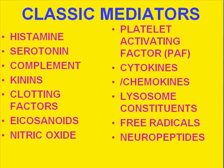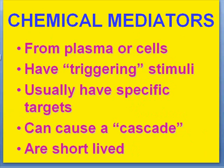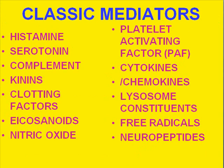In this next 10 minutes we're going to be discussing my not favorite part of the acute inflammation chapter — the mediators. It's not that they're not interesting, it's just that they can't easily be put into the whole linear sequence of events, so we're just going to have to learn them one by one. There will be some rote aspect here. Let's talk about the main classic mediators: histamine, serotonin, complement, kinins, clotting factors, eicosanoids, nitric oxide, PAF or platelet activating factors, cytokines, chemokines, lysosome constituents, free radicals, and neuropeptides. Let's try to fit them in logically in their role in acute inflammation.